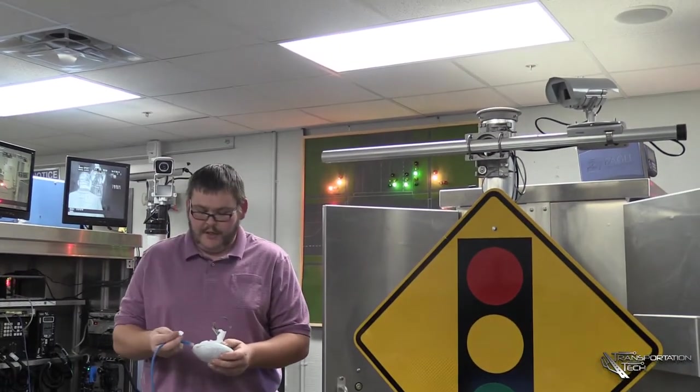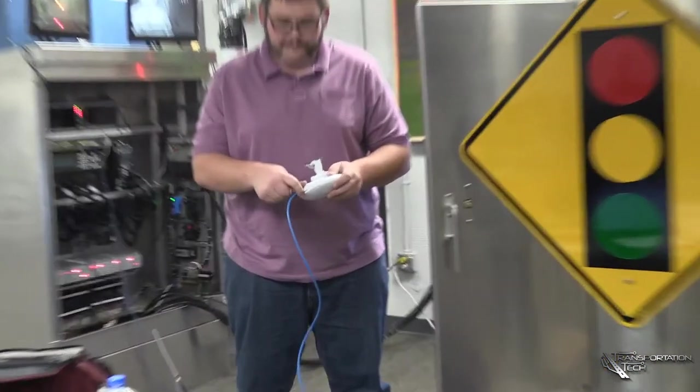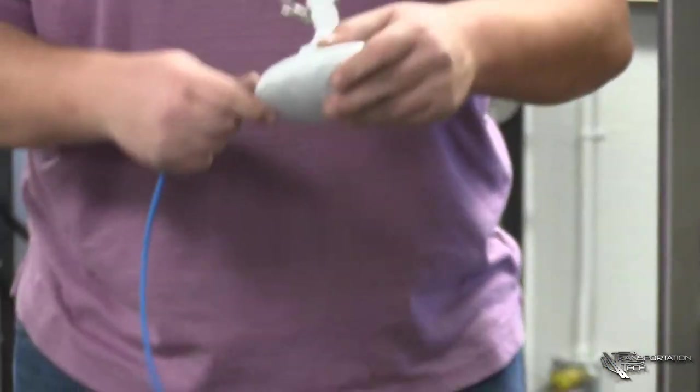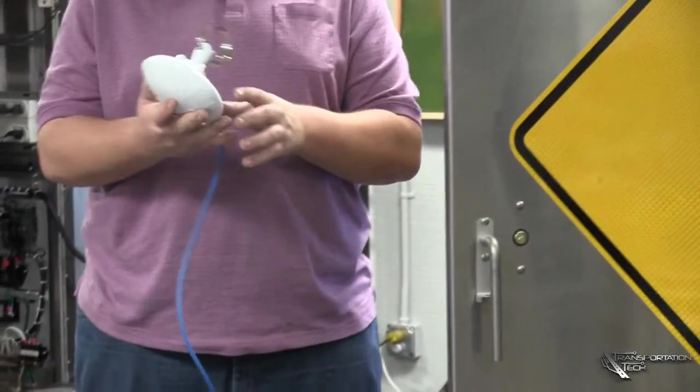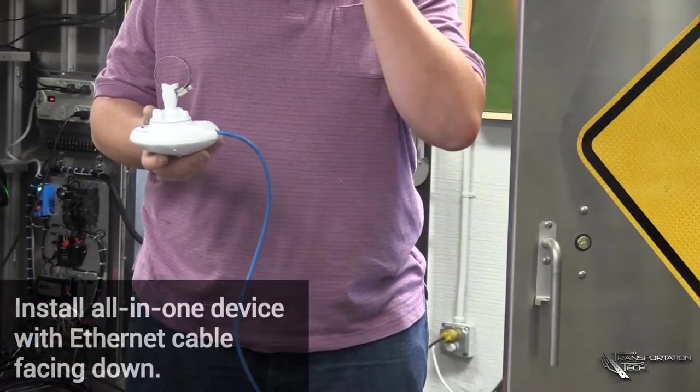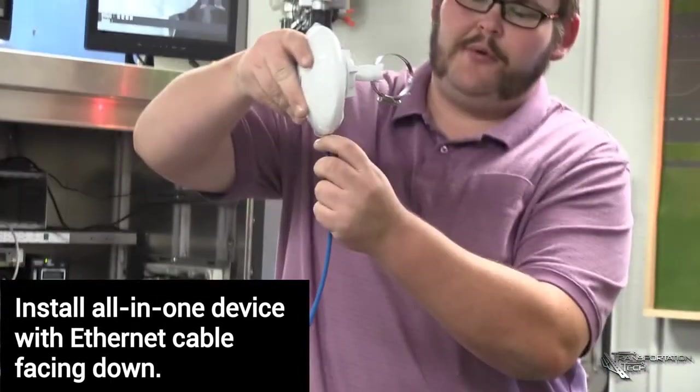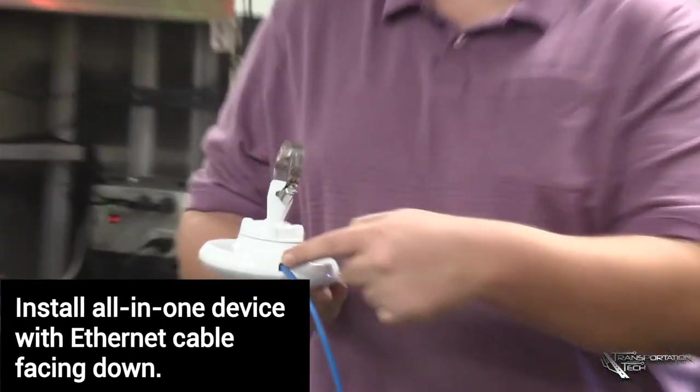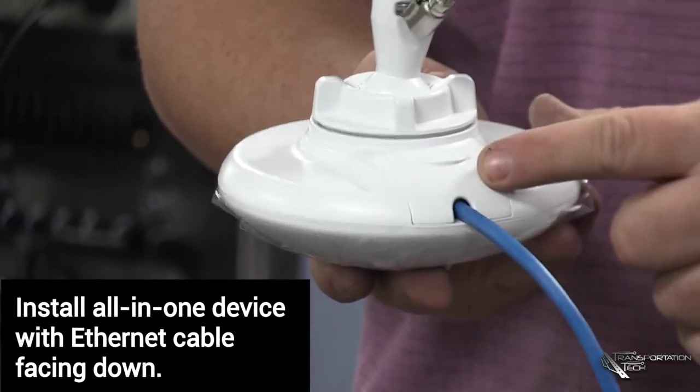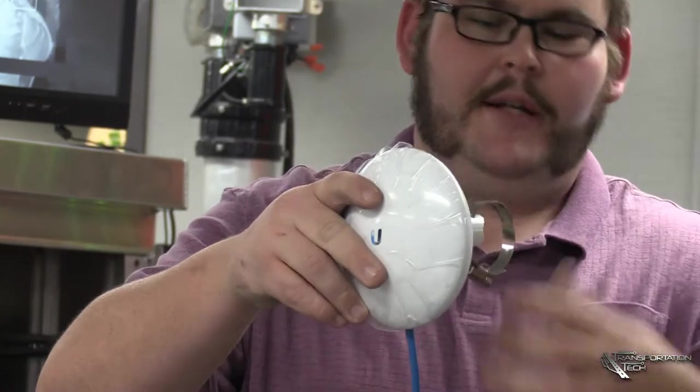This one actually when you plug it in has a little door that just snaps in. With that being said, on quite a few of these all-in-ones the ethernet cable should always be down because obviously this isn't completely sealed, so it's not completely weather tight. If it's down, less chance of moisture getting into it.